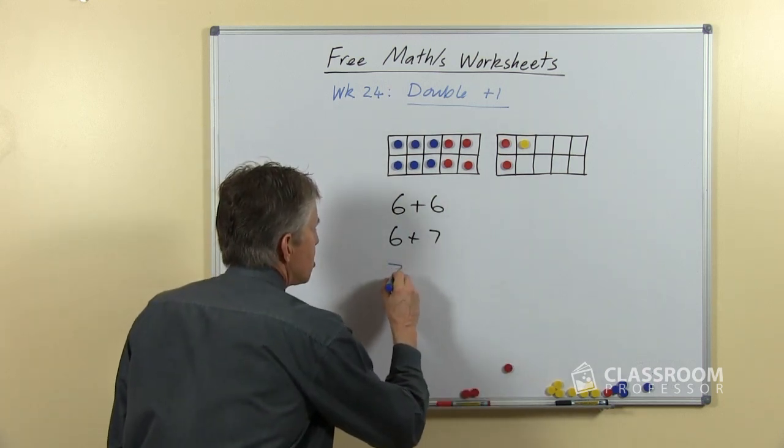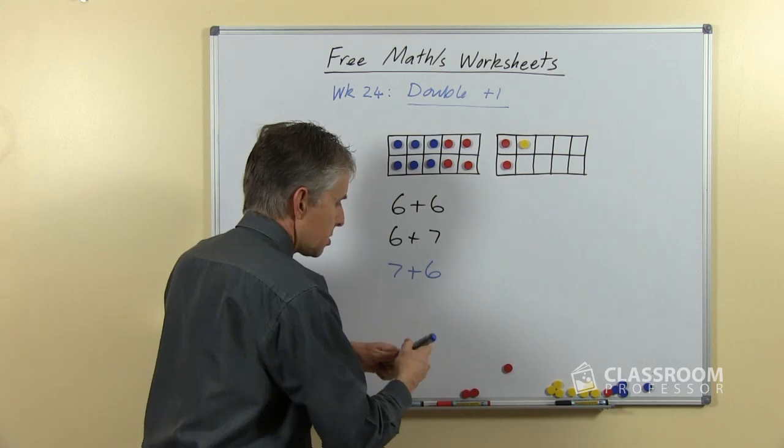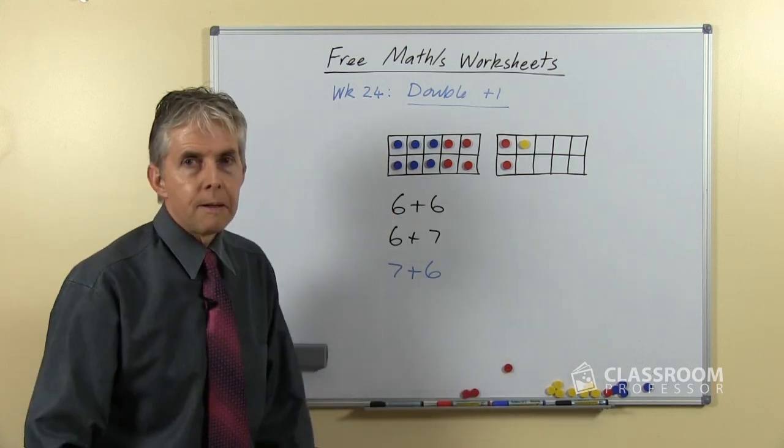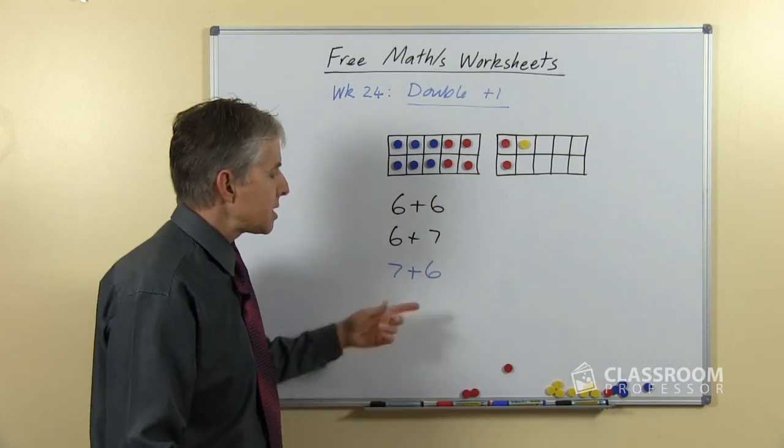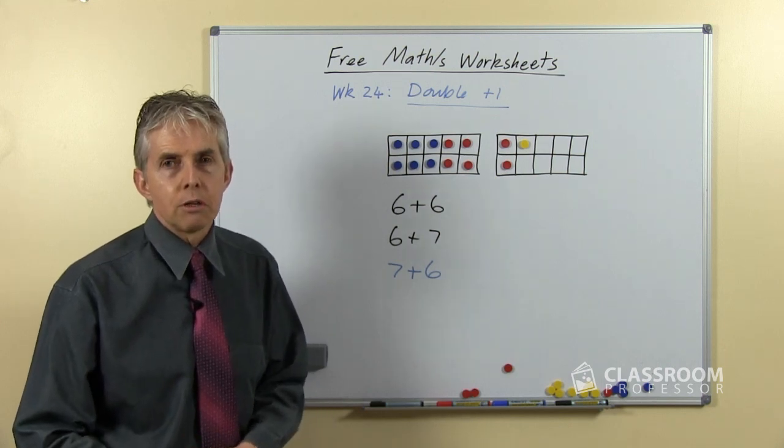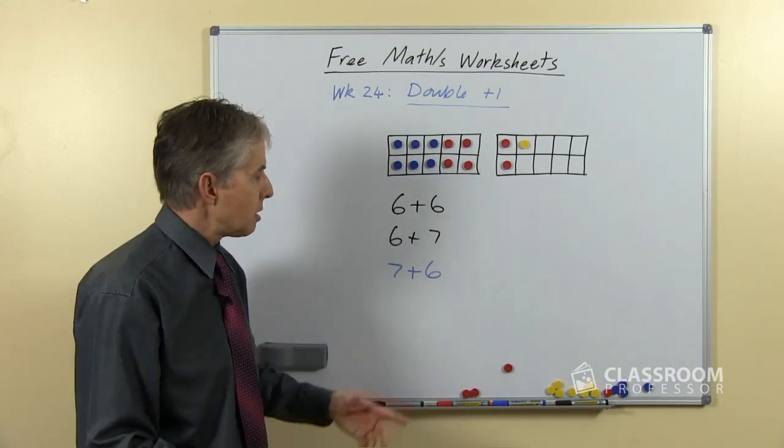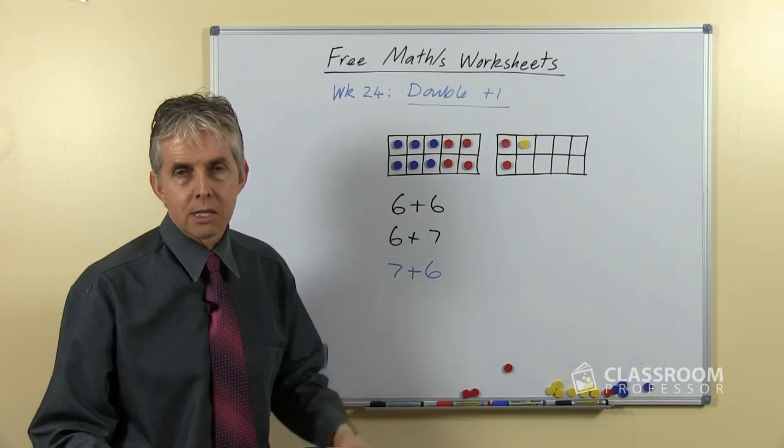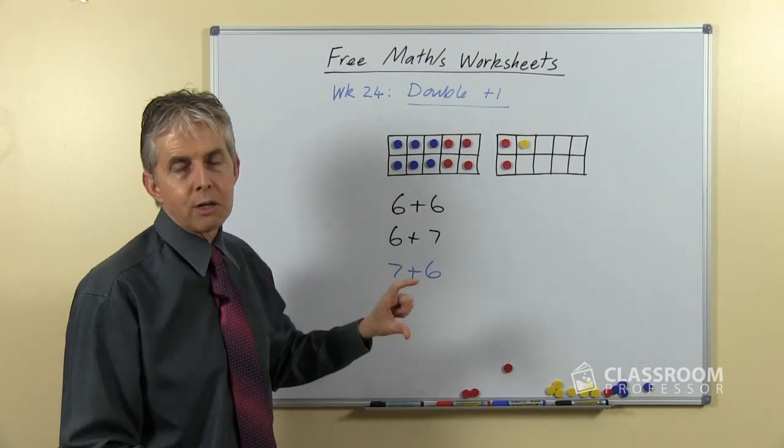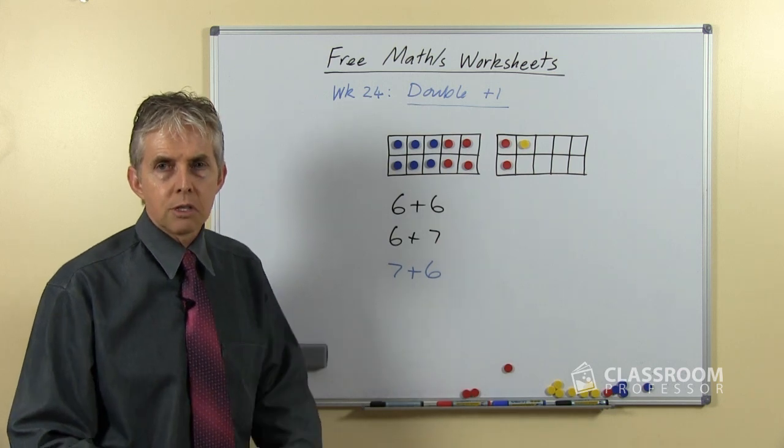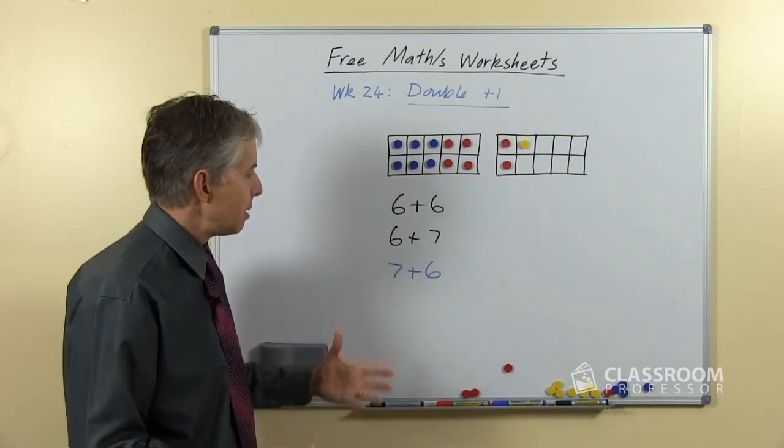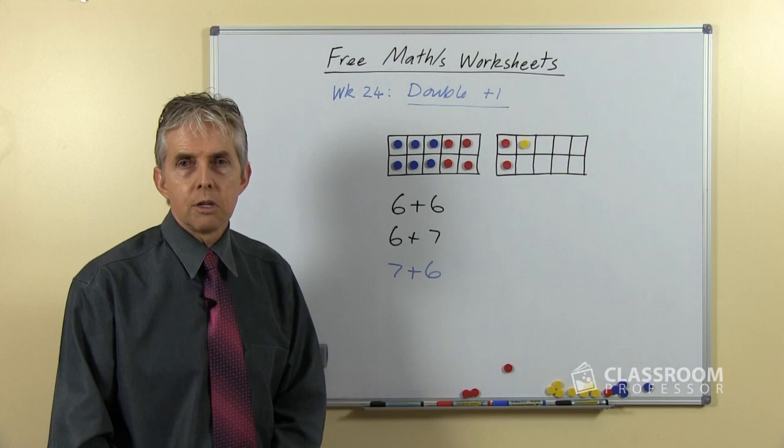Later on the worksheets there are some turn around facts like that and so we can use the same approach. One thing to say here, 7 plus 6, you could have a child say well I know 7 plus 7 and I can take one away so it is actually the same of course as a double take away one. I wouldn't teach both strategies I think that would confuse the students giving them too many choices but it's certainly an option if the students can do it.